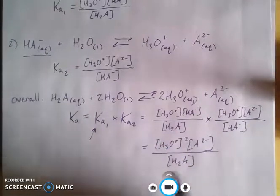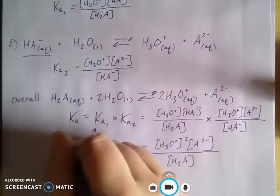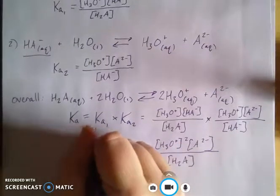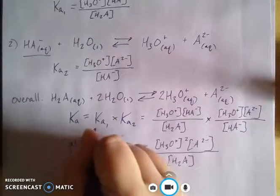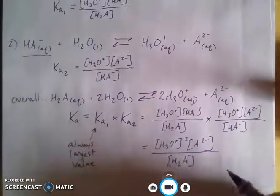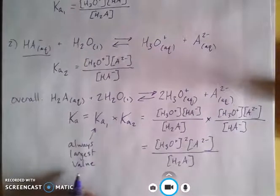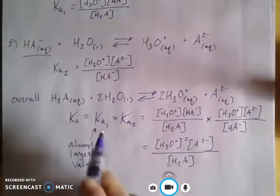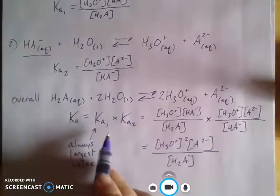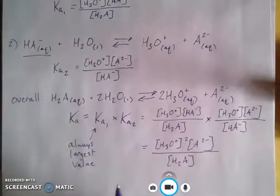So for any process where we're donating multiple protons, talking about diprotic and triprotic, this value is always going to be the greatest value, and then your Ka for the subsequent protons that are being donated are going to always be smaller than this first one. So it's always going to be that the first step is the largest - you're always going to get the most hydronium out of the first step - and we can actually use that information to make some assumptions about our equilibrium concentrations.